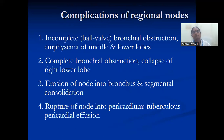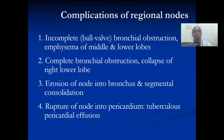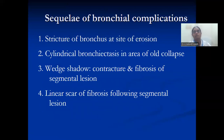Complications of regional lymphadenopathy: enlarged lymph nodes can cause bronchial obstruction, emphysema, and complete bronchial obstruction with collapse. Erosion can happen. Consolidation and rupture of the node into the pericardium causes tuberculous pericarditis. Sequelae of bronchial complications include rupture of the bronchus at the site of erosion, cylindrical bronchiectasis in areas of old collapse, ring shadow due to contracture and fibrosis of segmental lesions, and linear scar of fibrosis following segmental lesion.